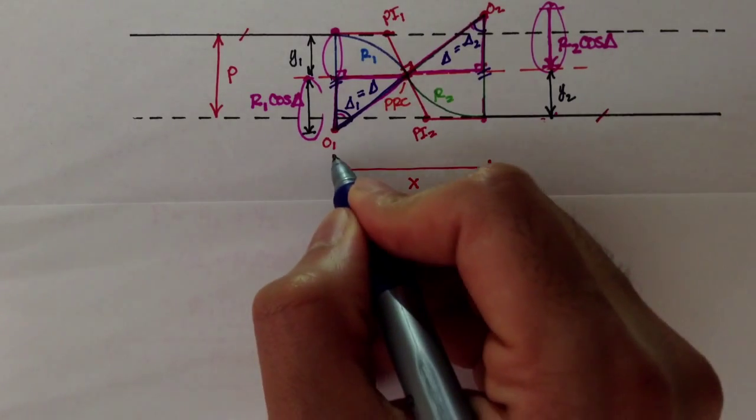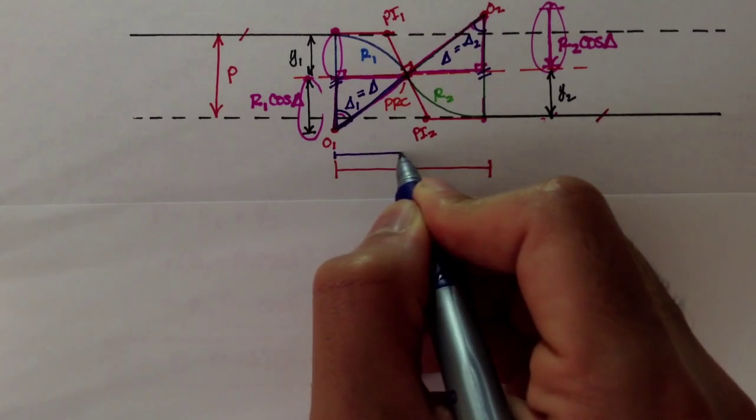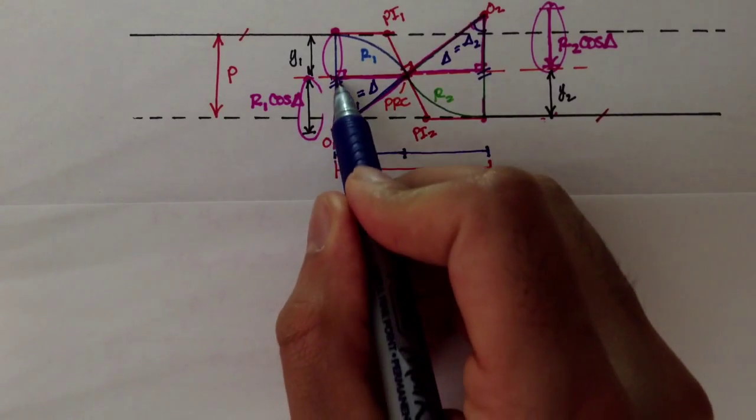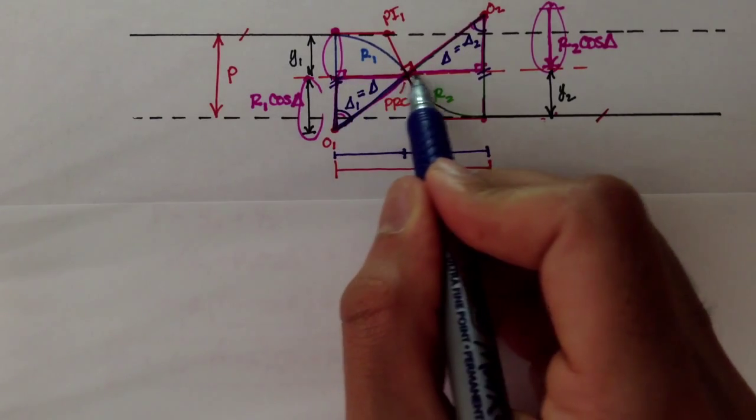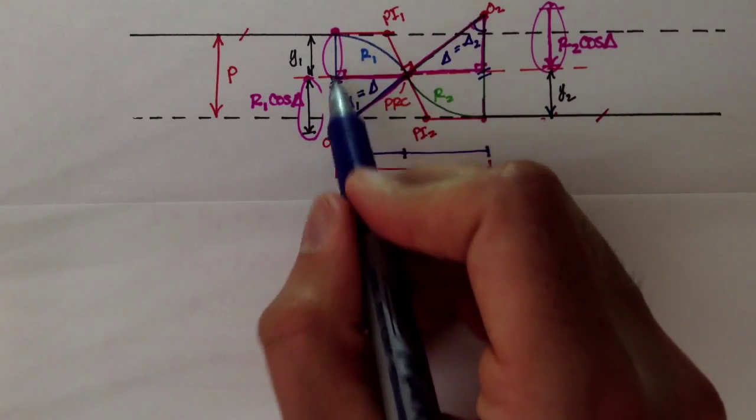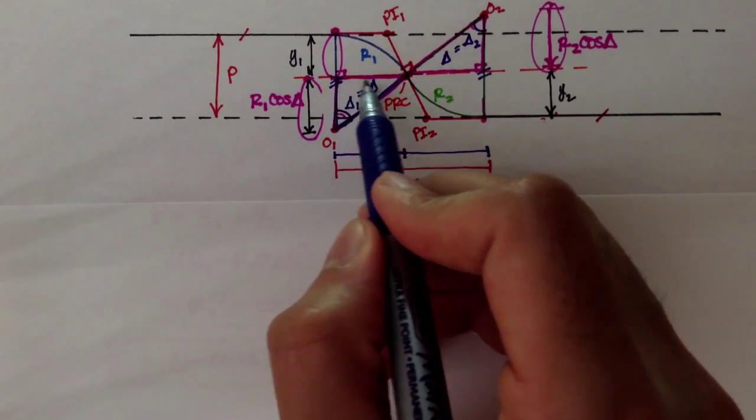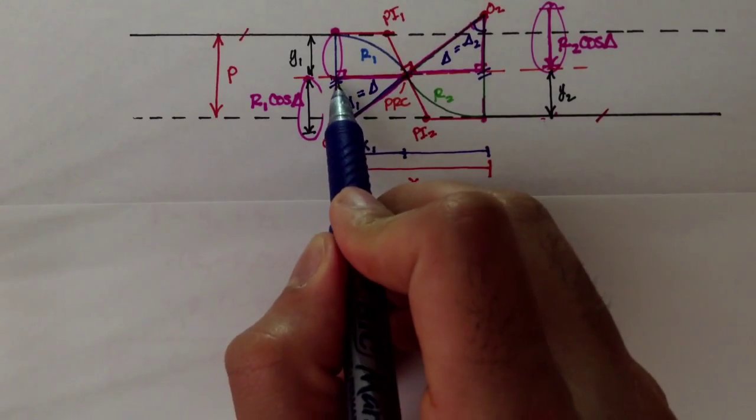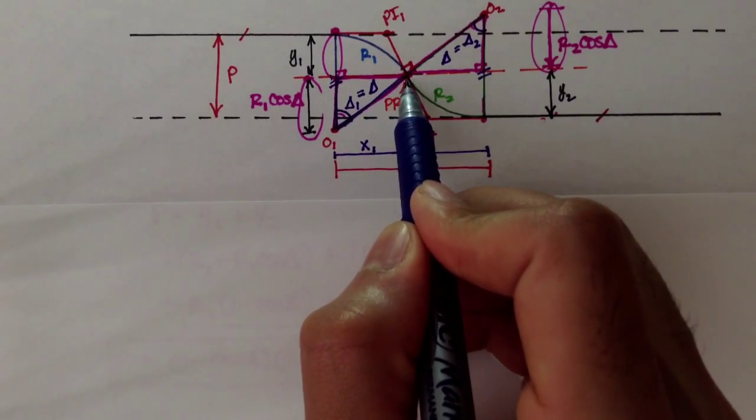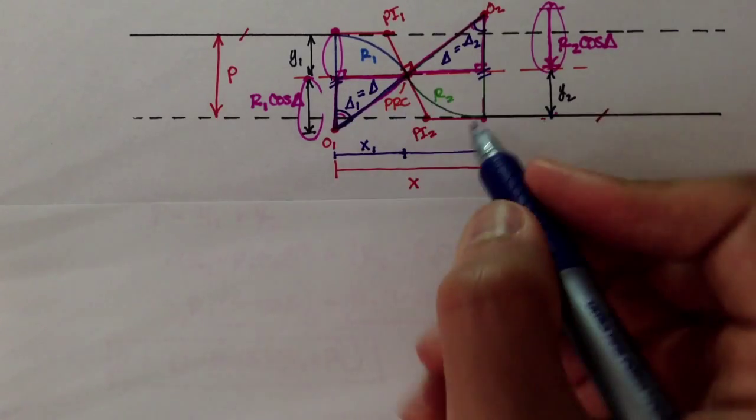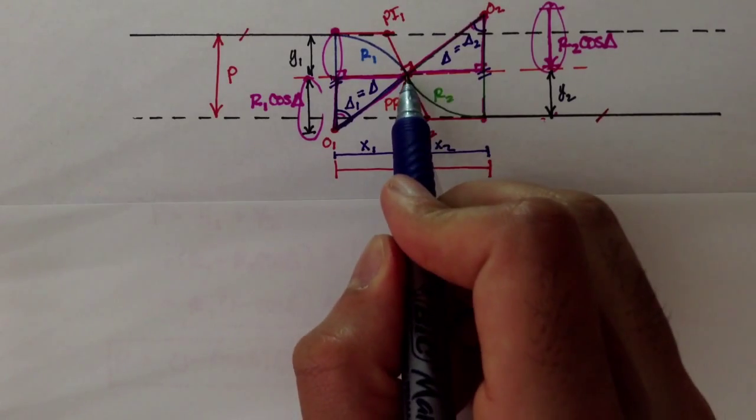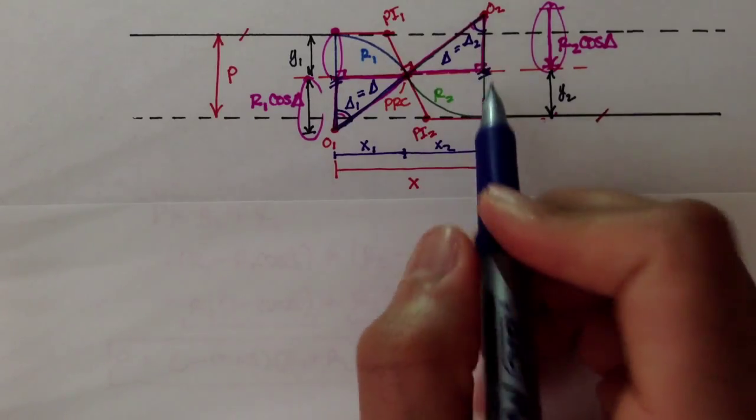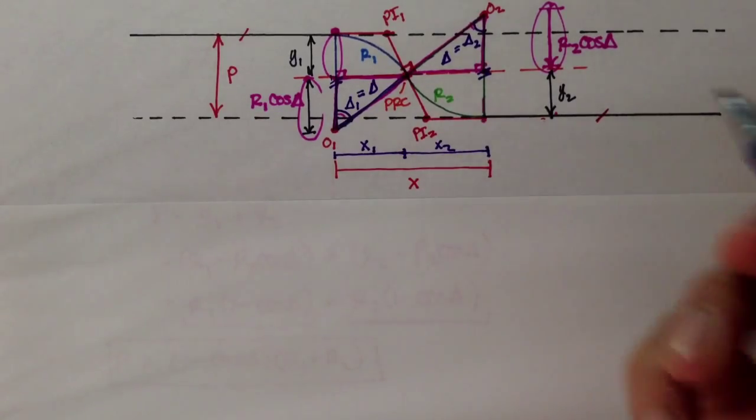X would be simply the sum of this distance, plus this distance. And this distance starts here, where this dashed orange line we drew in the last video intersects this blue line here. And it's the X1, I'm going to call that X1. X1 is the distance from this point to the PRC, the point of reverse curvature. And X2 would be the distance of the point of reverse curvature to this point where this dashed line intersects this vertical green line, okay?